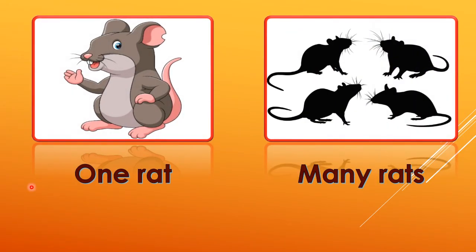Do you remember 'one' and 'many' from junior KG? One means only one and many means more than one. Look at the picture — see how many rats? One. That's why O-N-E, one. This is what? Rat — R-A-T, rat. One rat. Next, what are all these? How many rats are here? One, two, three, four — more than one rats, that's why M-A-N-Y, R-A-T-S. See children, we have added S here.